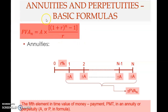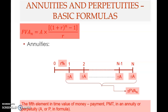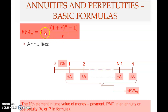In this formula we have four elements — similar to chapter five — but we replace present value with payment and future value with future value of annuity. The four elements are: future value of annuity, the payment A, the interest rate, and the term n. Knowing three, you can solve for the fourth unknown.